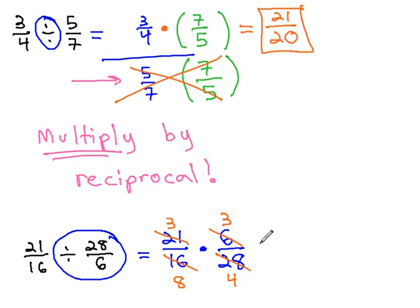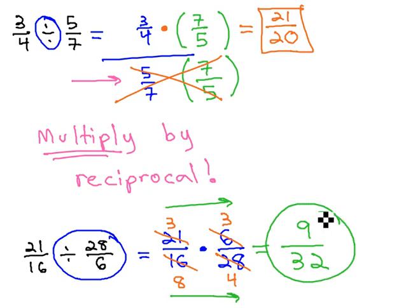And now, we're ready to multiply straight across on this fraction. Left in the numerator is 3 times 3, or 9. In the denominator, 8 times 4 is 32, and we get our final solution of 9 over 32.